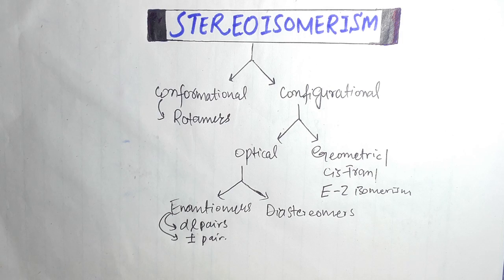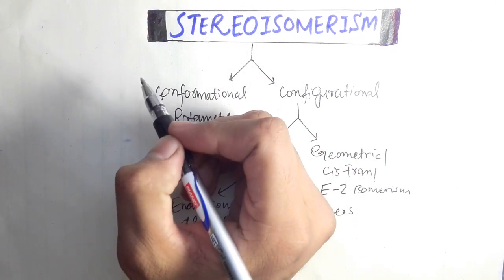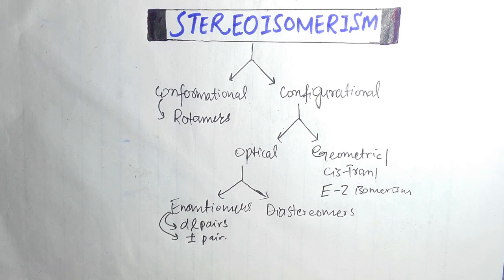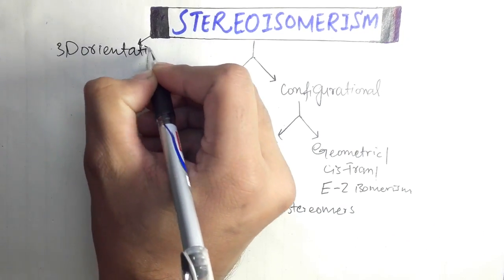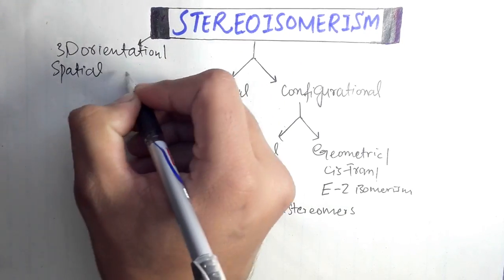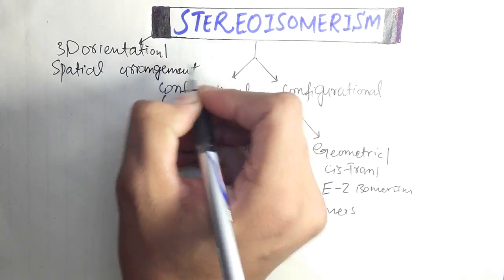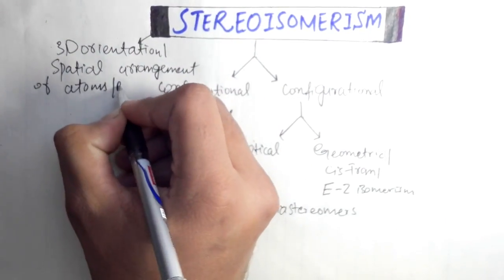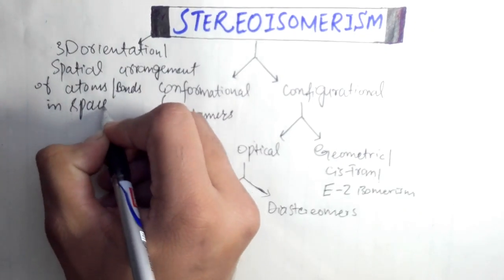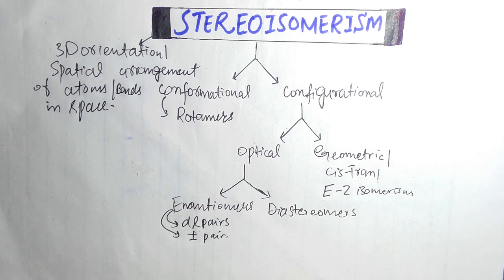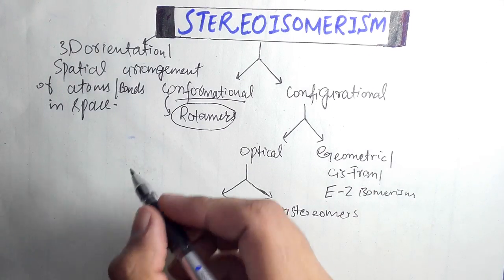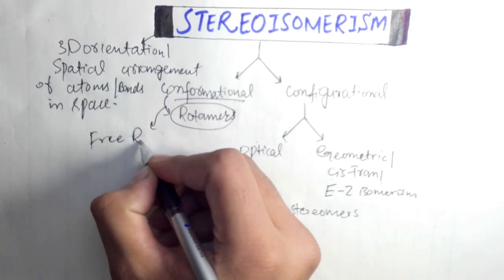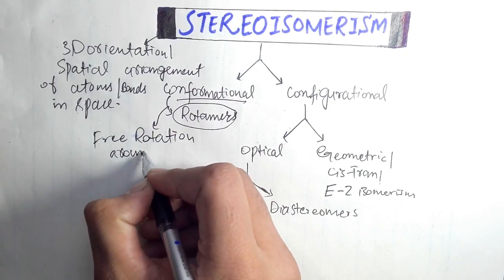Now I will briefly explain all these terms. First, stereoisomerism: compounds having the same molecular formula, same structural formula, same order of connectivity of atoms, and same bond sequence, but differing with respect to the 3D orientation or spatial arrangement of atoms or bonds in space — such isomerism is called stereoisomerism. Conformational isomerism, or rotomers, involves isomers that can be interconverted into each other by free rotation around a sigma bond.